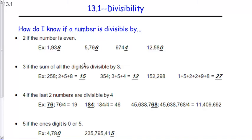A number is divisible by 3 if the sum of the digits is divisible by 3. If we look at these examples, 258: 2 plus 5 plus 8 is 15, 15 is divisible by 3. 3 plus 5 plus 4 is 12, that's divisible by 3. 152,298, add those up you get 27, that's divisible by 3.